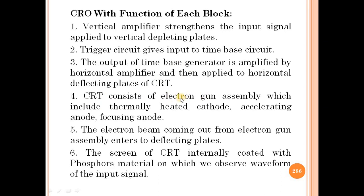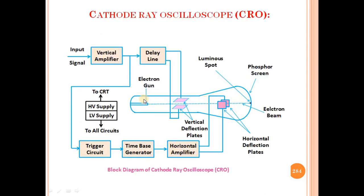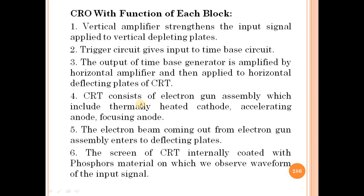The CRT consists of an electron gun. The electron gun assembly includes a thermally heated cathode, an accelerating anode, and a focusing anode.